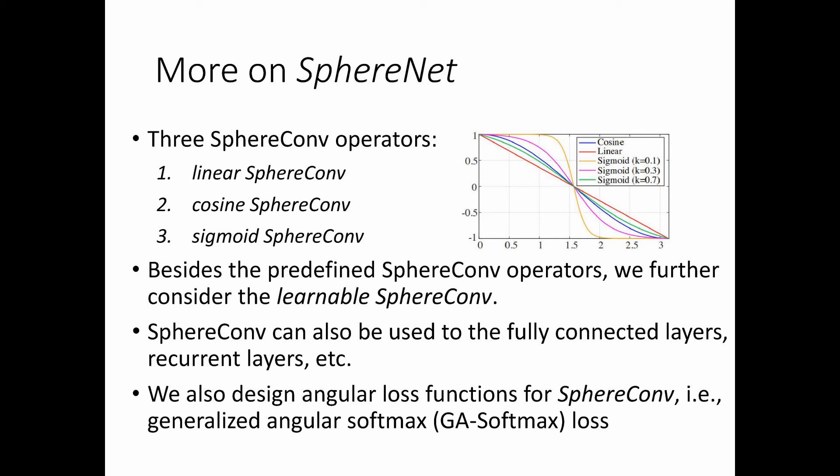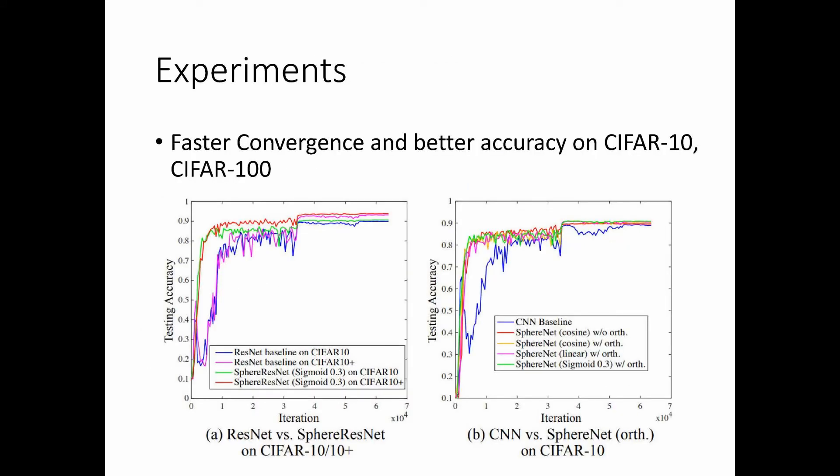SphereConv can also be easily generalized to fully connected layers and recurrent neural networks. We also design special loss functions that focus on the angular decision boundary, which work well with the SphereConv operators. Experimentally, SphereNet achieves much faster convergence and better accuracy on CIFAR-10 and CIFAR-100.